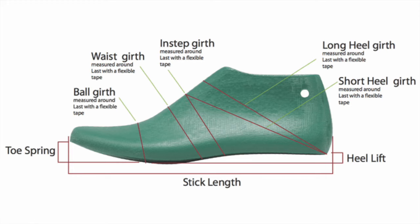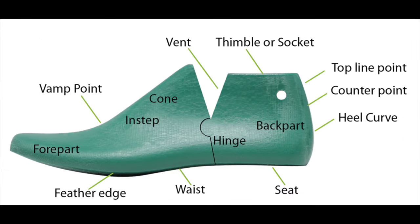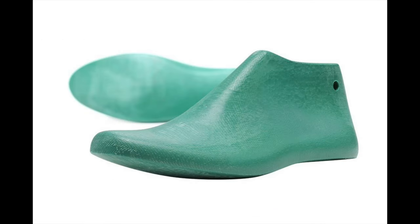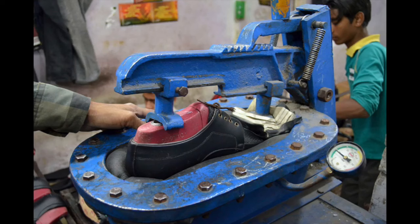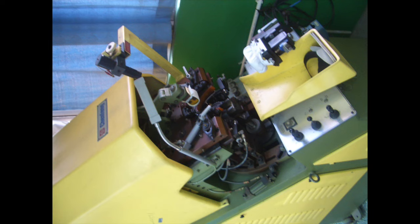Lasts come in broken and solid versions because in the process of lasting the upper pattern, it gets lasted around the last. There's a machine that does it and a machine that needs to take it out. Sometimes in the earlier stage, the last is still inside and a human has to remove it. The broken last is much easier to pull out of a more complex or longer last. Then there are solid lasts that you have to figure out.